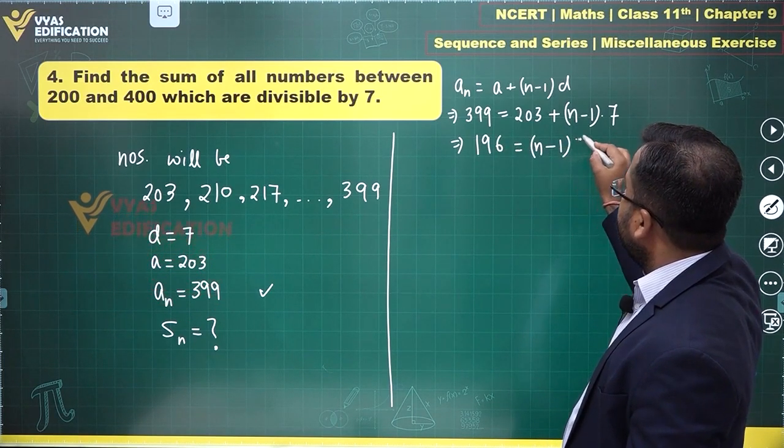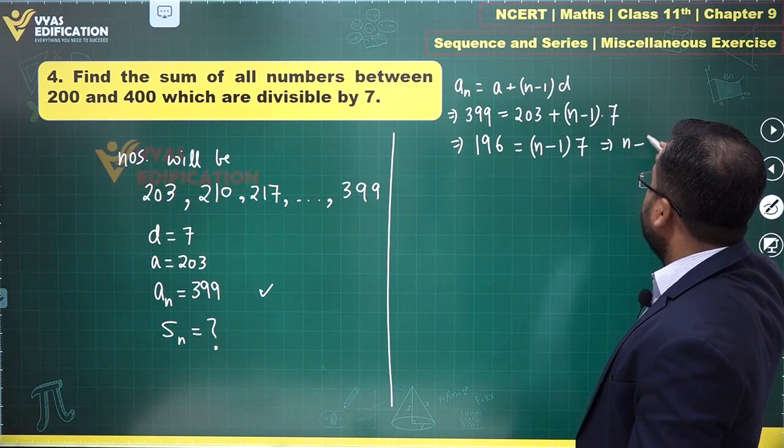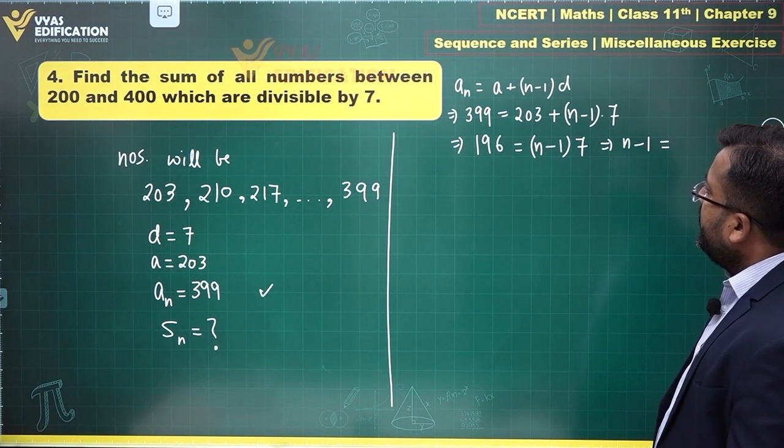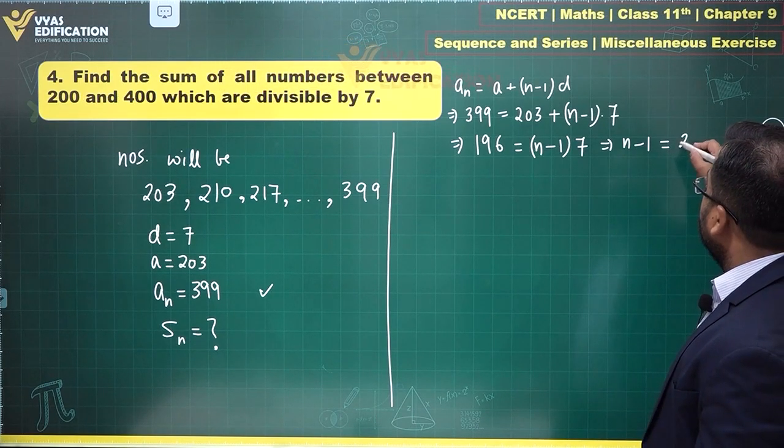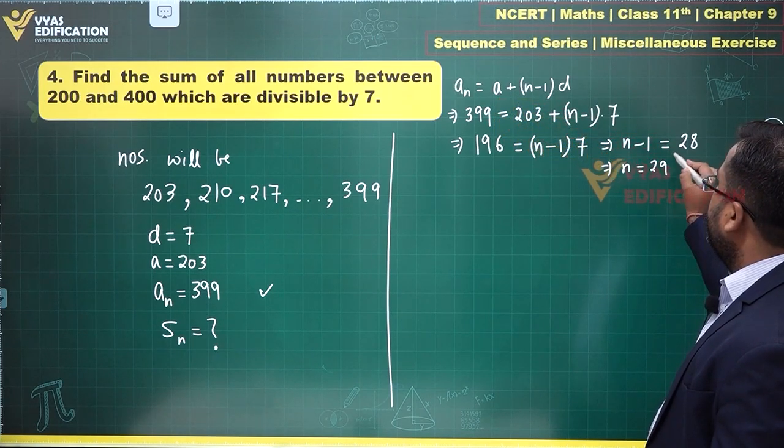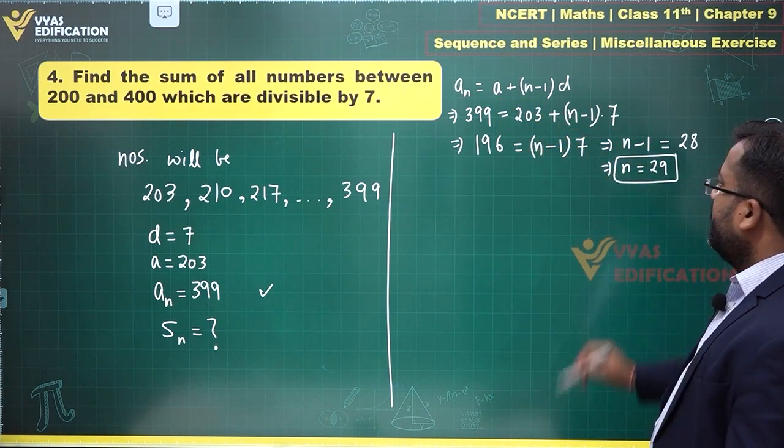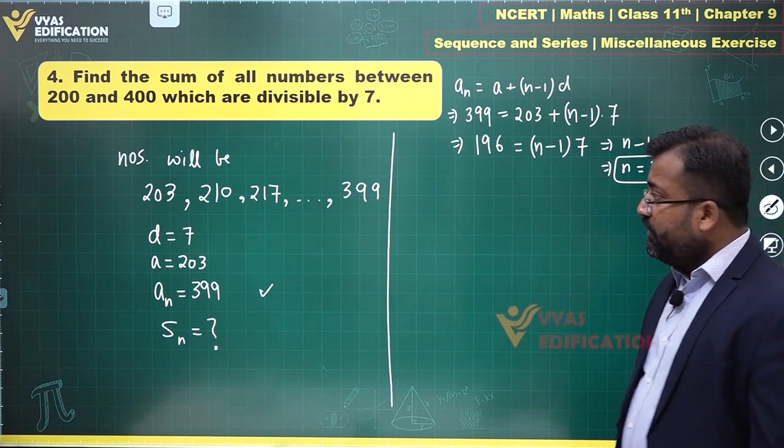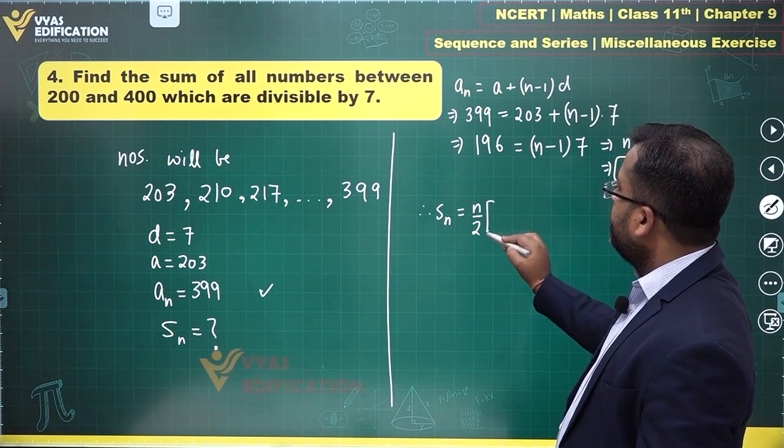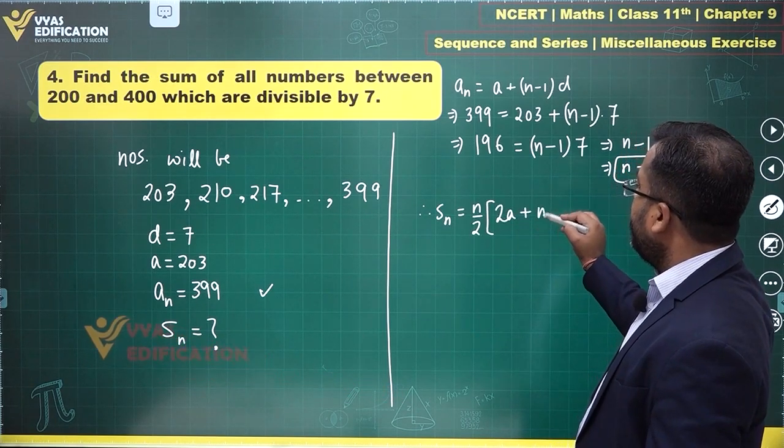That tells me n minus 1 will be equal to 196 upon 7, which is 28. This tells me n is equal to 29. Therefore S_n, which will be n by 2 times (2a plus (n minus 1)d), or we can use n by 2 times (a plus a_n).